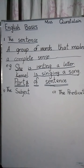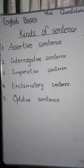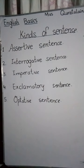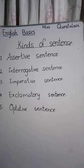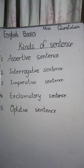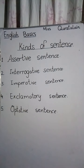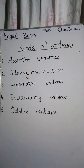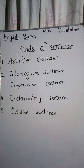There are majorly five kinds of sentences. The first is the assertive sentence, which contains a statement. The second is the interrogative sentence, which contains a question or seeks some information. The third is the imperative sentence, which expresses commands, requests, or advice. The fourth is the exclamatory sentence, which expresses certain feelings or emotions. And the fifth is the optative sentence, which expresses some desire.